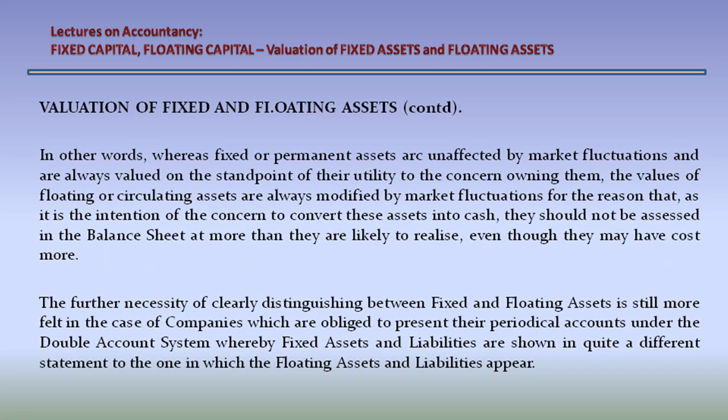In other words, whereas fixed or permanent assets are unaffected by market fluctuations and are always valued on the standpoint of their utility to the concern owning them, the values of floating or circulating assets are always modified by market fluctuations. Since it is the intention of the concern to convert these assets into cash, they should not be assessed in the balance sheet at more than they are likely to realize, even though they may have cost more.